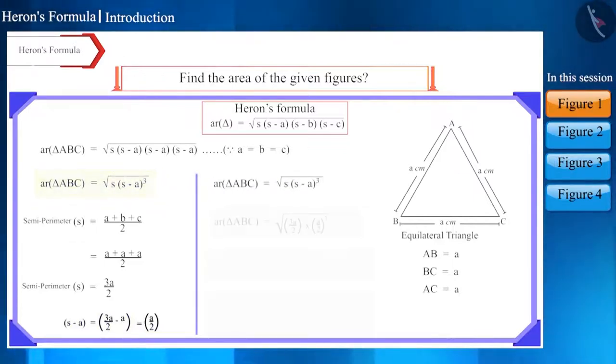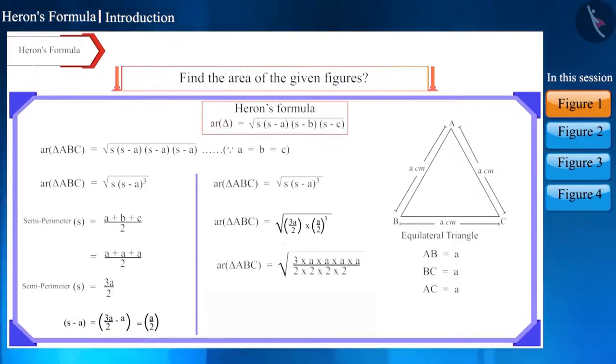Substituting in the formula, we will get square root of (3A divided by 2) multiplied by (A divided by 2) raised to the power of 3. We can also write it in fractional form as follows. This expression is the formula for the area of an equilateral triangle.